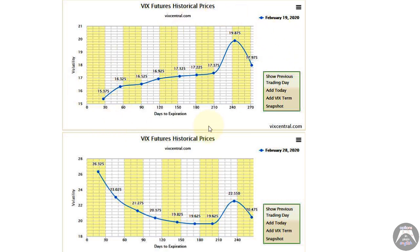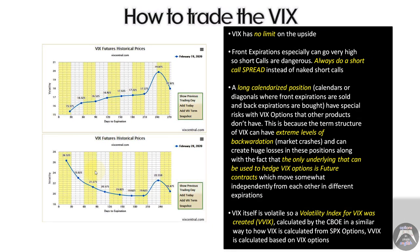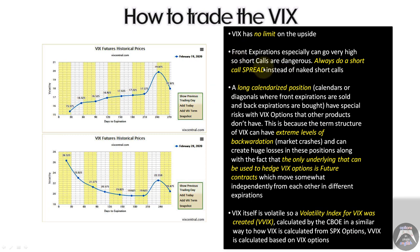That's why once you start getting involved with term structure, you have to be careful how you structure your trades. VIX has no limit to the upside — it could go to 26, it could go to 80, as we saw this year. Front expirations can go very high, so short naked calls are dangerous. Always do a short call spread if you want a short call position — at least your losses are defined. You don't have unlimited risk.